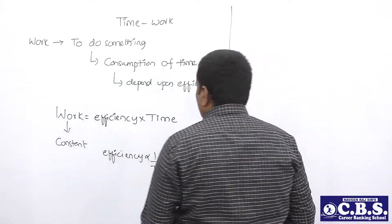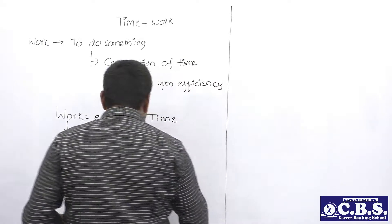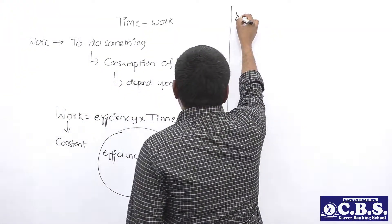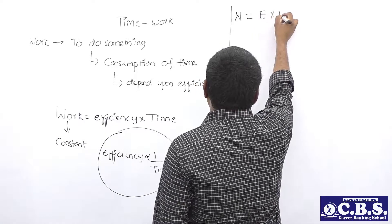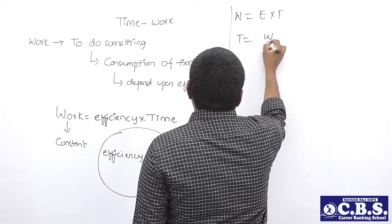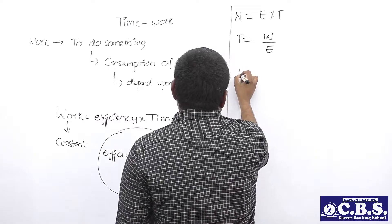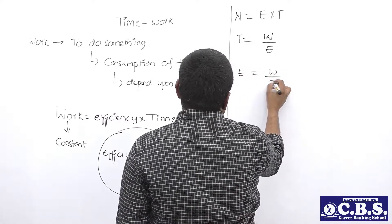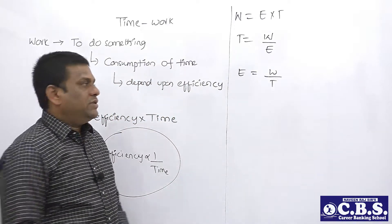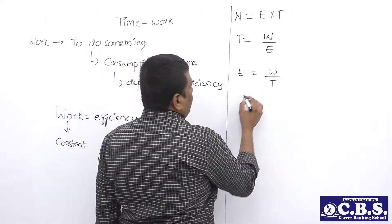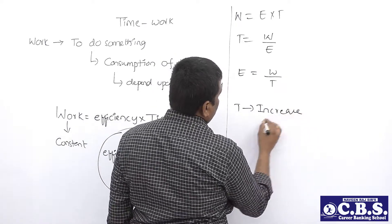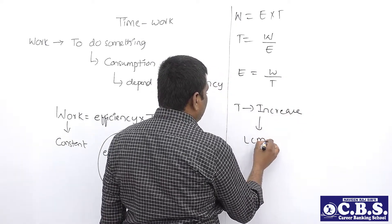So therefore, Work = Efficiency × Time. This is the crucial first concept of Time and Work. From this: Time = Work ÷ Efficiency, and Efficiency = Work ÷ Time. This is the fundamental tool in Time and Work questions. Now, time is an increasing function, so when we have a well-defined time available, we can use the LCM concept.